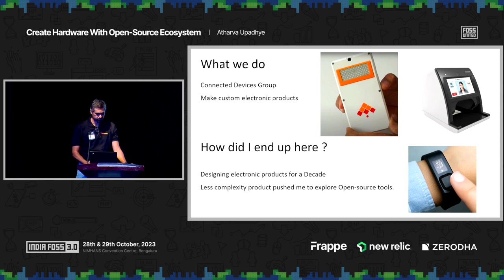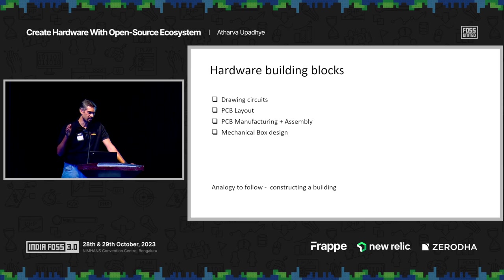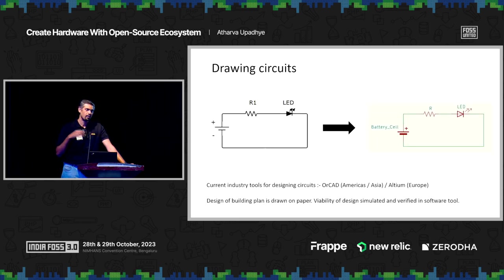So how many of you have learned electronics earlier in engineering? Very few. I'm going to briefly explain how hardware design works — what the steps are. For those who don't know anything about hardware design, let's follow the analogy of constructing an apartment. So the first step is drawing a circuit on paper — like drawing an LED circuit. This is the schematic design step.